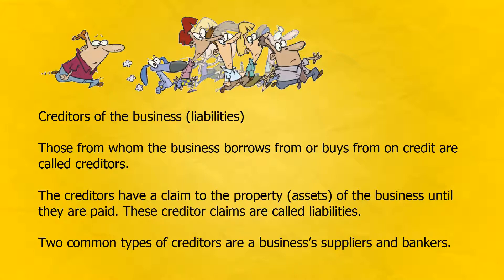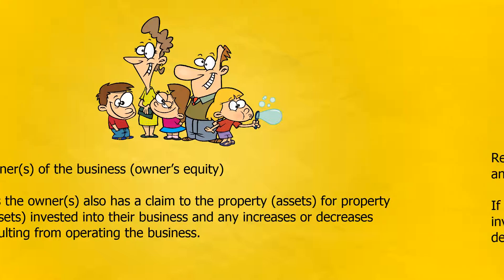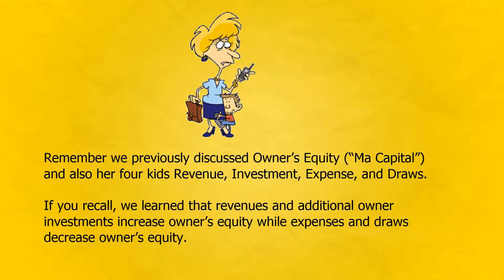Two common types of creditors are a business's suppliers and bankers. Owners of the business — owner's equity. Yes, the owner also has a claim to the property assets invested into their business and any increases or decreases resulting from operating the business. Remember we previously discussed owner's equity — ma capital — and also her four kids: revenue, investment, expense, and draws. We learned that revenues and additional owner investments increase owner's equity, while expenses and draws decrease owner's equity.